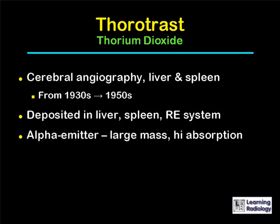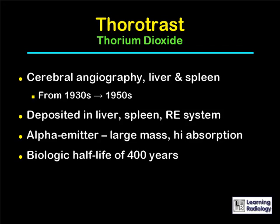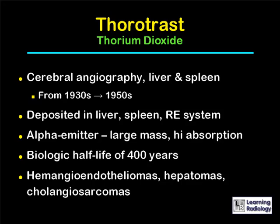Alpha particles have a relatively large mass and are very highly absorbed immediately around the source of the alpha emitter. Thorotrast also had a biologic half-life of 400 years, meaning it lasted well beyond the normal lifetime of an individual. Since it was deposited in the liver, spleen, and reticuloendothelial system and remained there, many years after its use individuals began to manifest hemangioendotheliomas in the liver, hepatomas, and cholangiosarcomas.